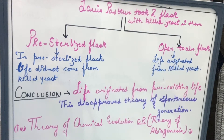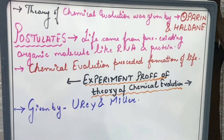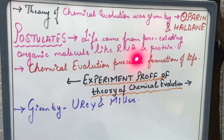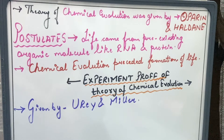Now let us talk about the theory of chemical evolution, or theory of abiogenesis. This theory was given by Oparin and Haldane. It states that life came from pre-existing organic molecules like RNA and protein, and that chemical evolution preceded the formation of life.